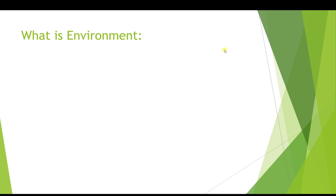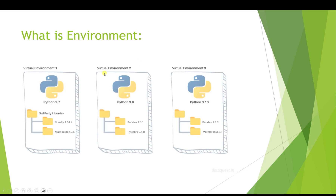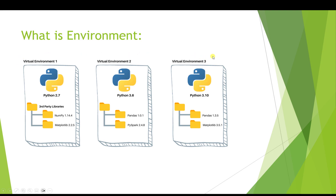In this section we are going to talk about the environment and create a Python environment. An environment is simply a setup where we work with different versions of Python and different libraries. For example, for one project we prefer to use Python 3.1, for another Python 3.6, and for another Python 2.7.